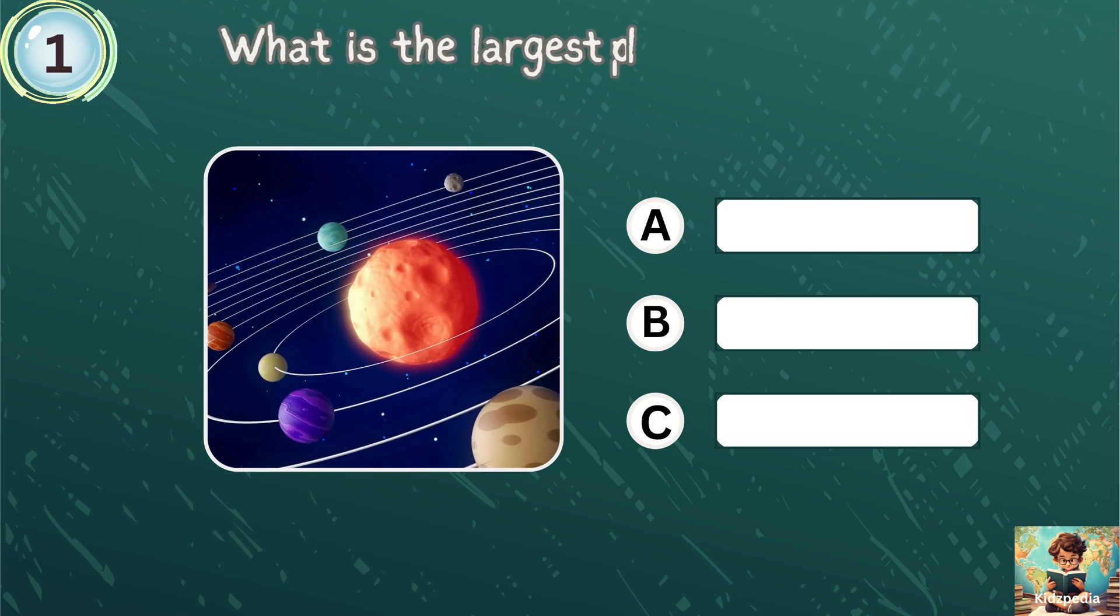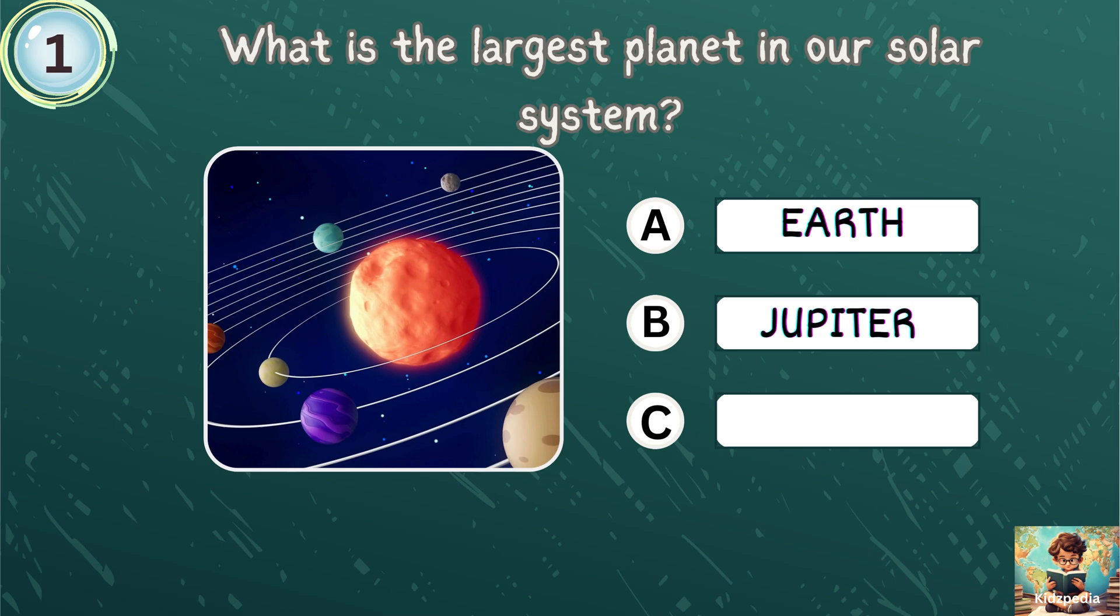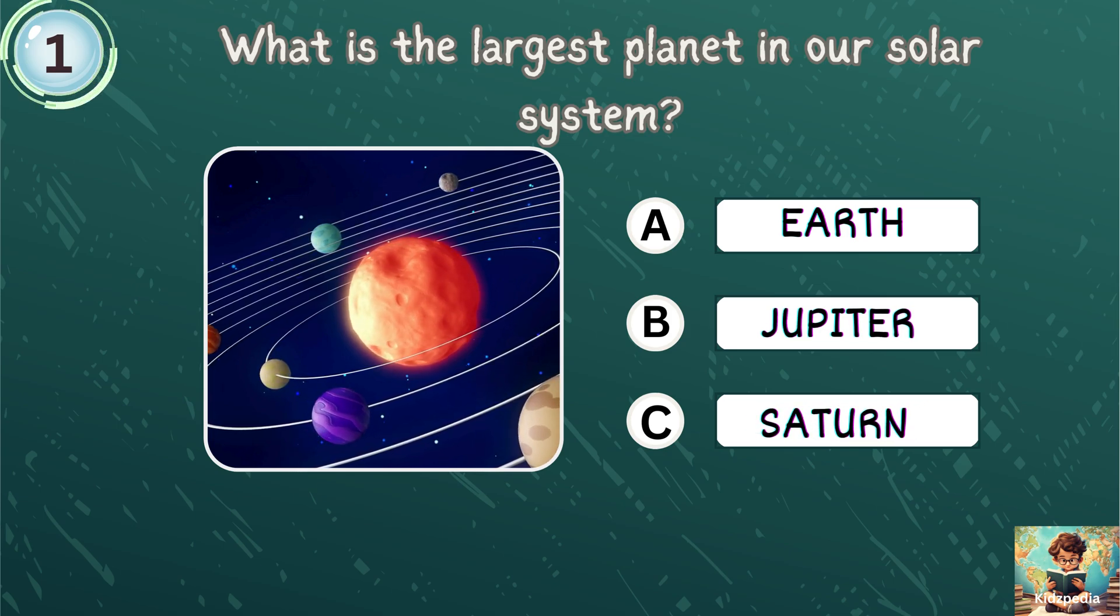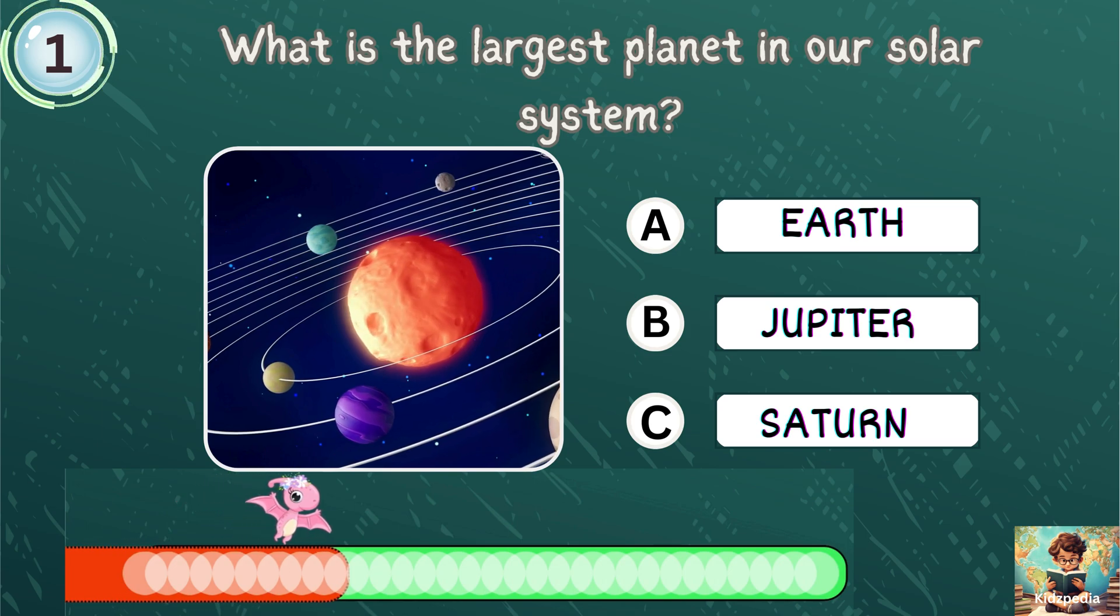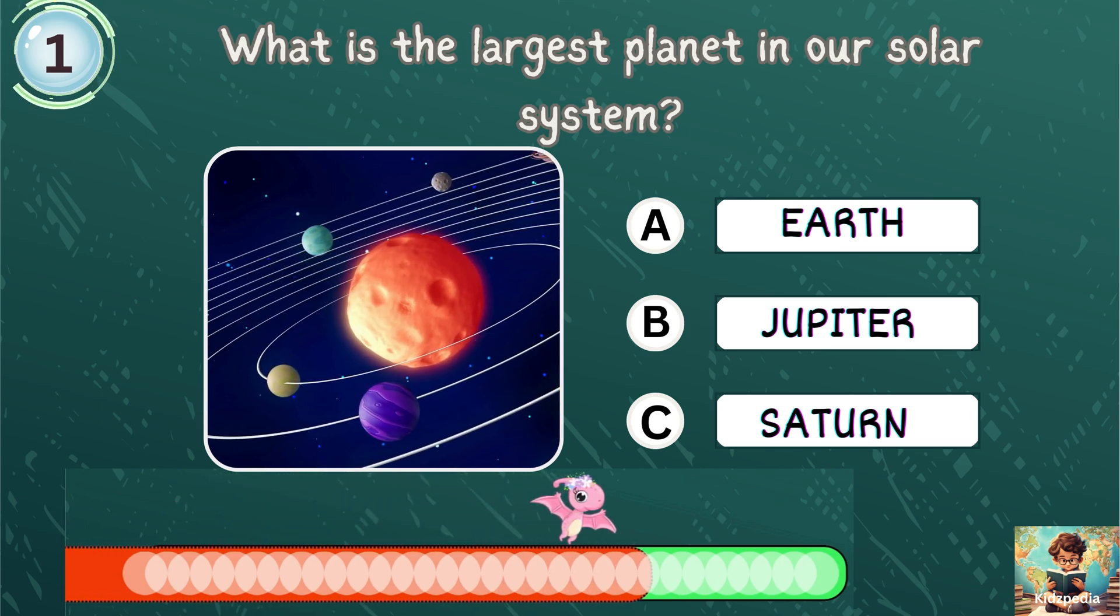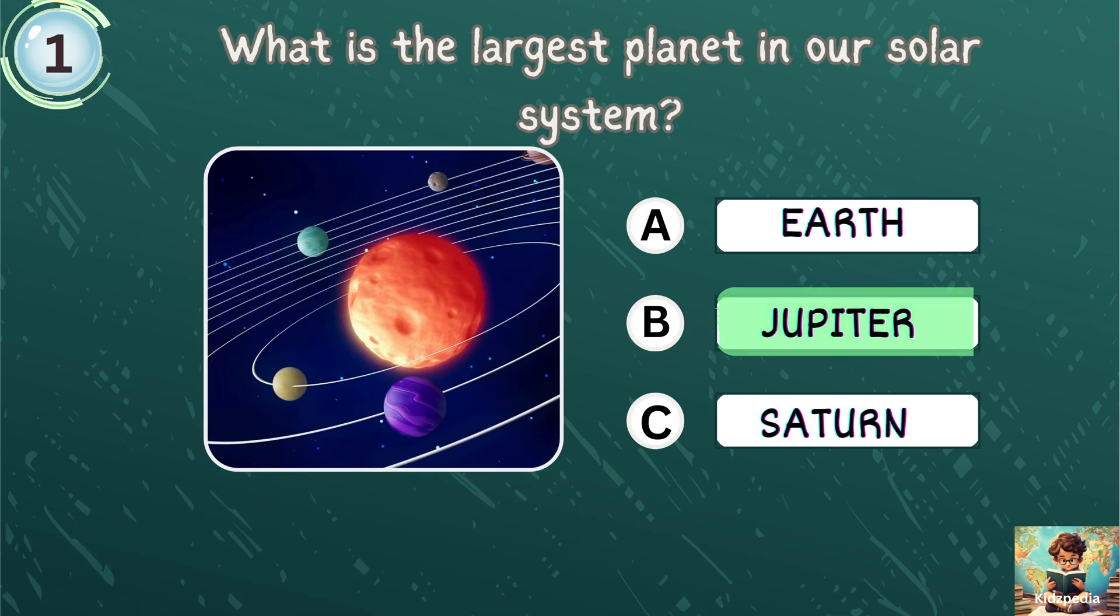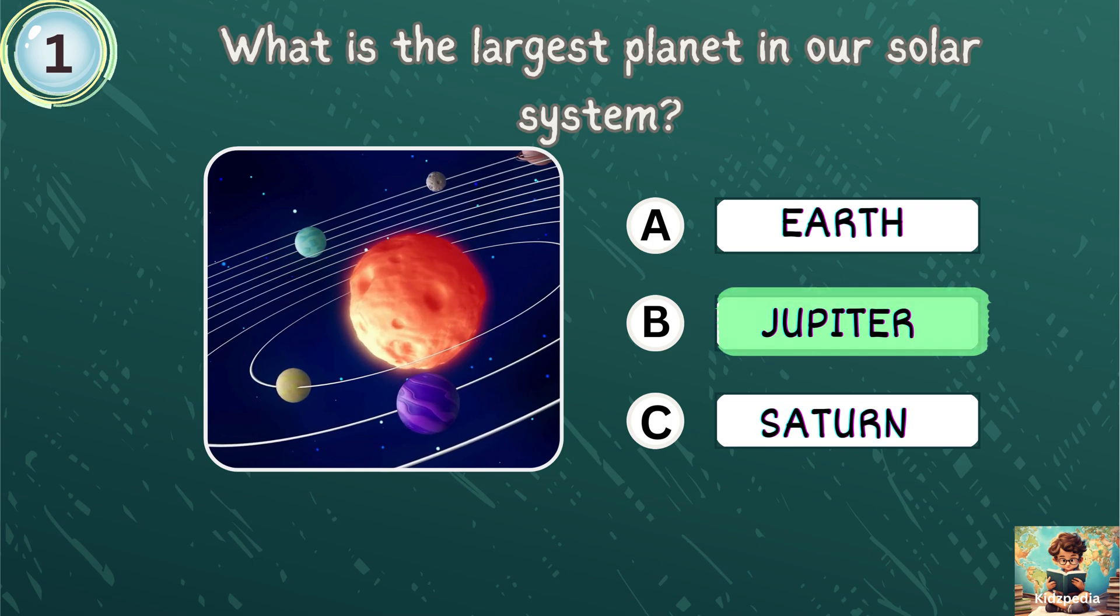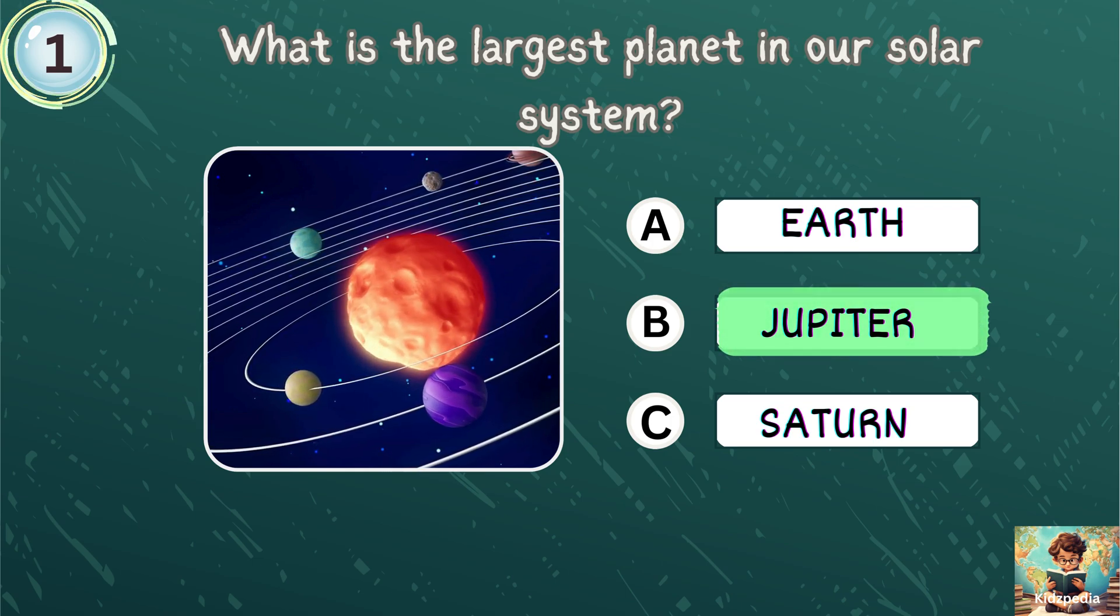What is the largest planet in our solar system? Earth, Jupiter, Saturn. Yes. Correct answer is Jupiter. Jupiter is the largest planet in our solar system.